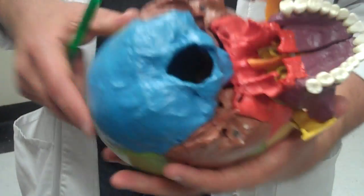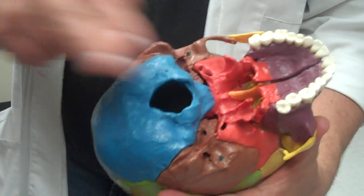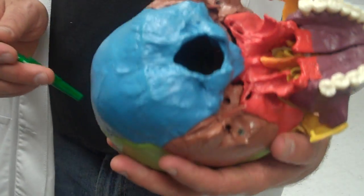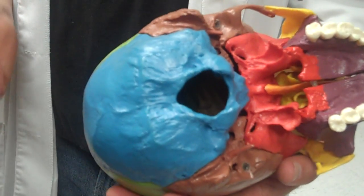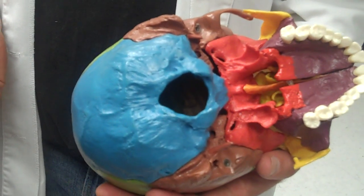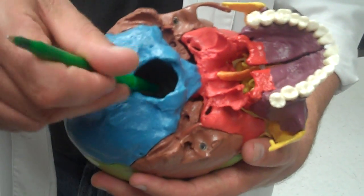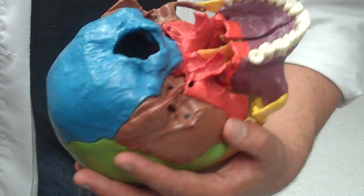Then we have the occipital bone. It's blue here. First part, foramen magnum. Magnum. Which means huge honking hole. Foramen magnum, right there. Huge honking hole.